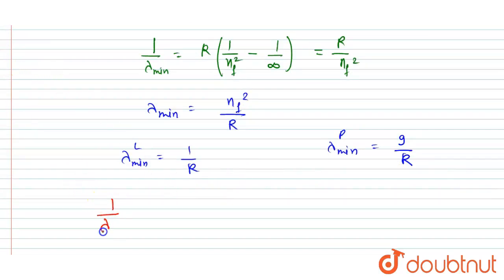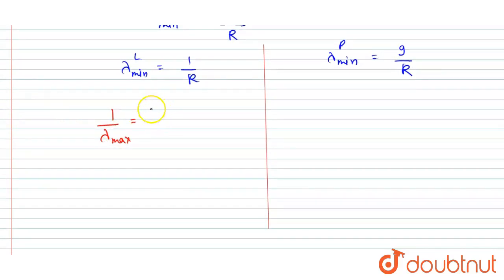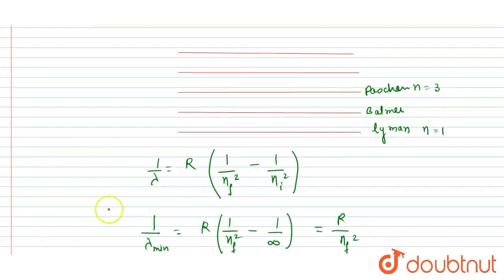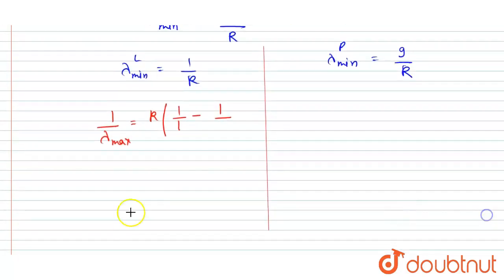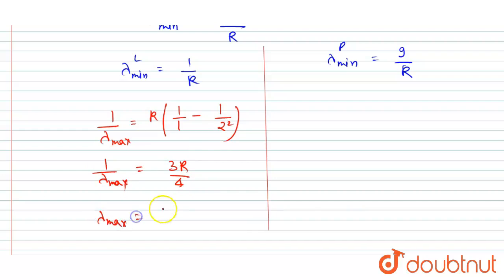Now let's calculate lambda maximum for Lyman first. For Lyman, n_f = 1 and n_i = 2 gives the highest lambda. So 1/λ_max = R·(1/1 - 1/4) = 3R/4. Therefore lambda max for Lyman equals 4/(3R).